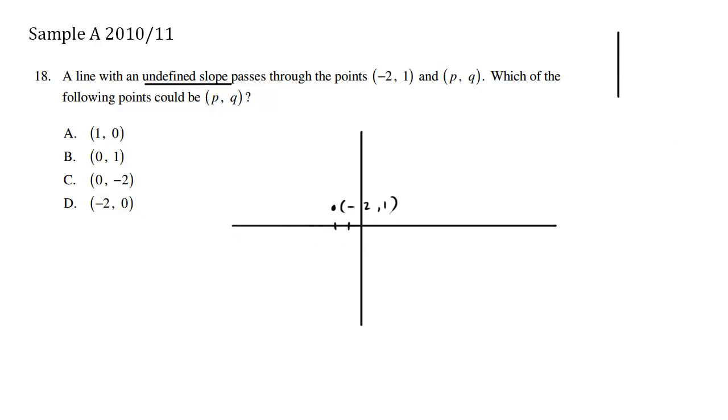So (-2, 0), let me just change the color here. So choice D, (-2, 0) is going to be here. So when we have this, this is (-2, 0).